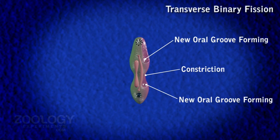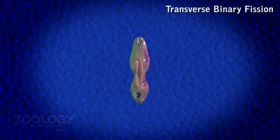The daughter micronuclei then separate. Simultaneously, the macronucleus divides amitotically by simply becoming elongated and constricted in the middle.